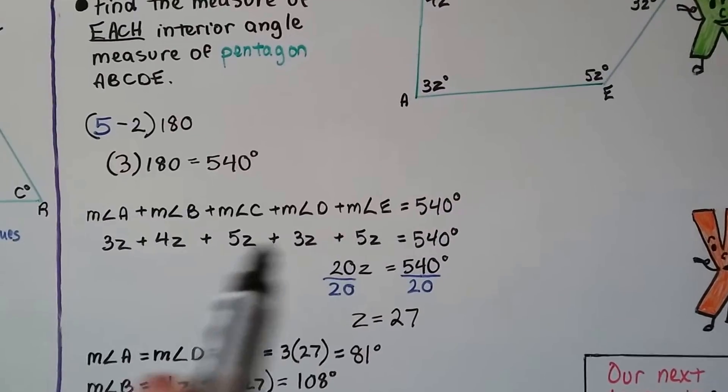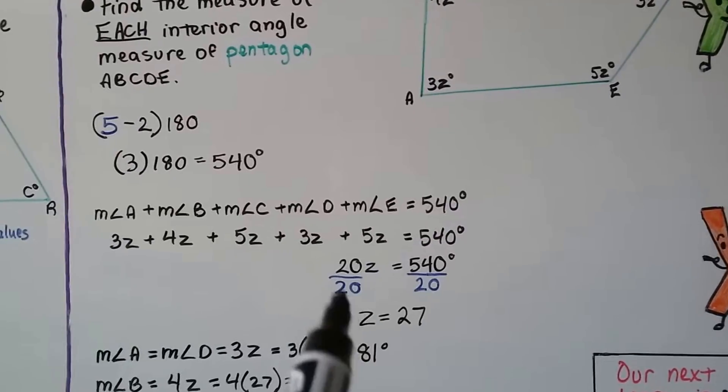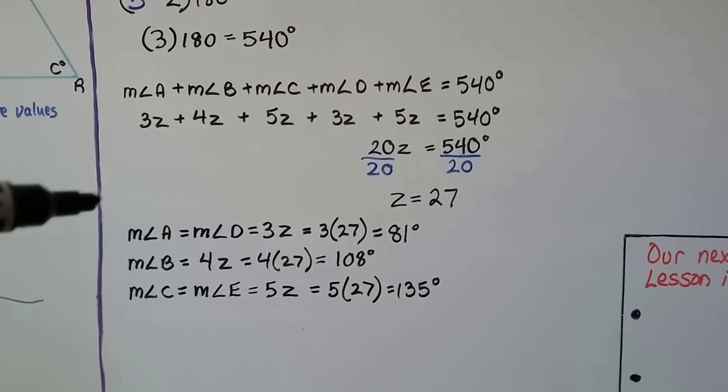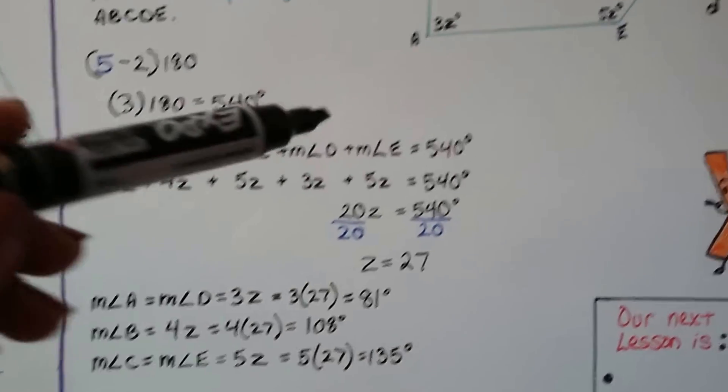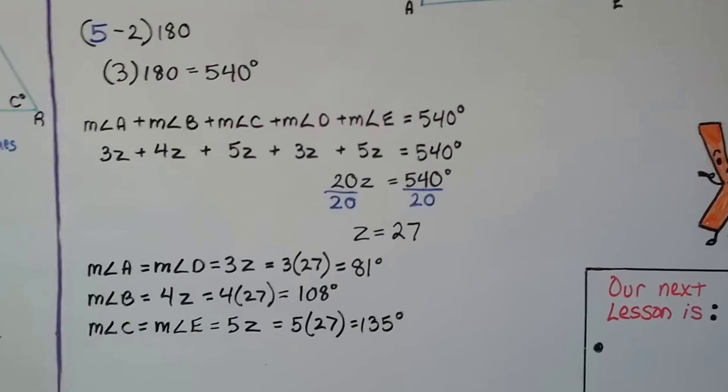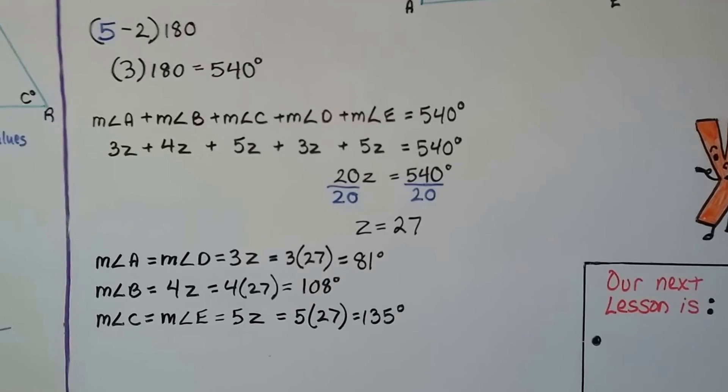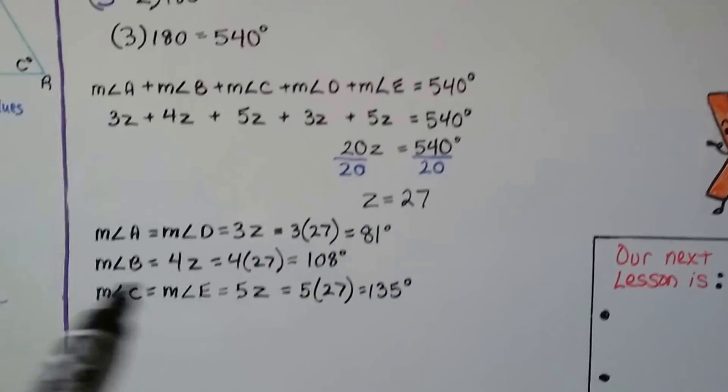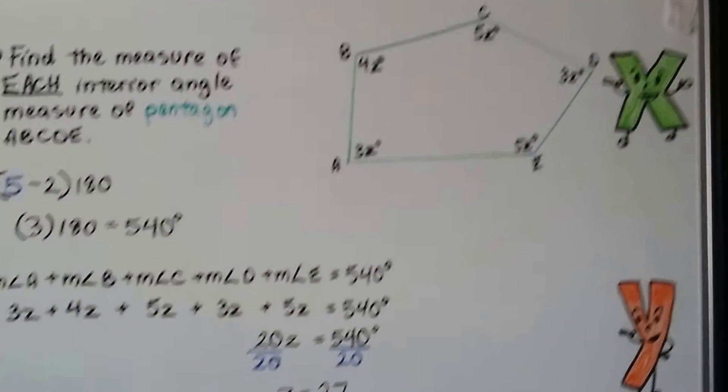We combine the like terms and get 20Z equals 540. We divide both sides by 20 coefficient and get Z equals 27. Now we multiply them. Measure of angle A and D are 3Z, so 3 times 27 is 81 degrees. B is 4Z, so 4 times 27 is 108 degrees. Measure of angle C and E are both 5Z, so 5 times 27 is 135 degrees. We were able to find all the angle measures of that pentagon.